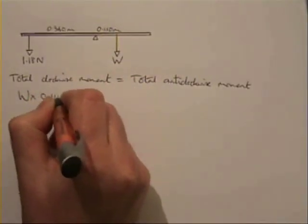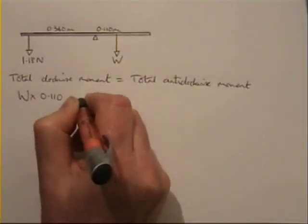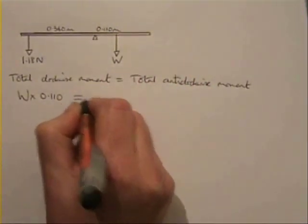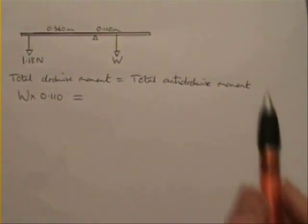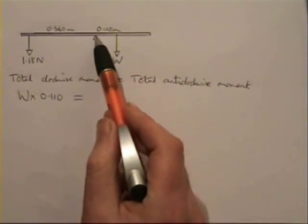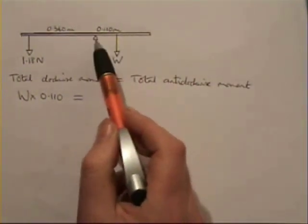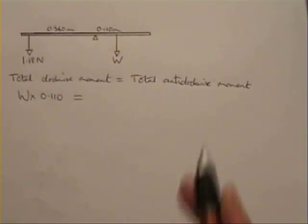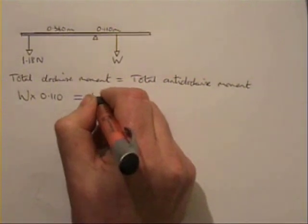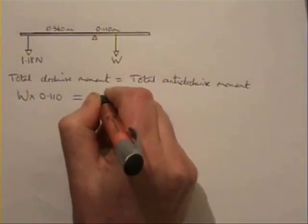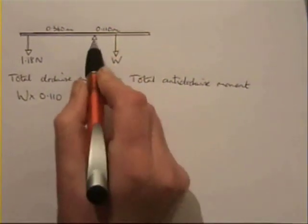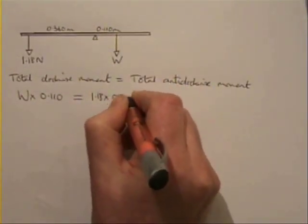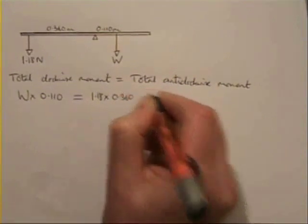That's the clockwise moment. There aren't any other forces with the clockwise moment. So that must be equal to the anticlockwise moment. And similarly if we take the pivot there, the force that's tending to turn everything anticlockwise is this. So the anticlockwise moment is 1.18 newtons times the distance from the pivot, which is 0.360 meters.